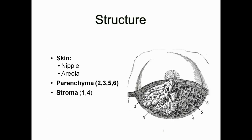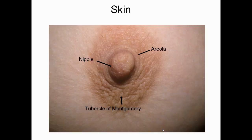The structure of the breast is divided into three parts: skin, parenchyma, and stroma. The skin is again divided into the nipple and the areola. The parenchyma consists of the glandular and fatty tissue, and there is the stroma also. We can more clearly differentiate the nipple and areola, and this is the regular surface called the tubercle of Montgomery.